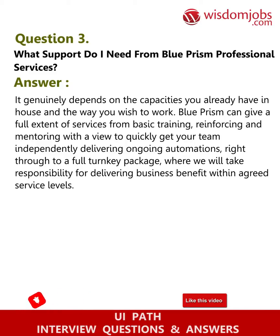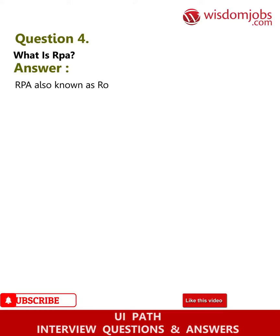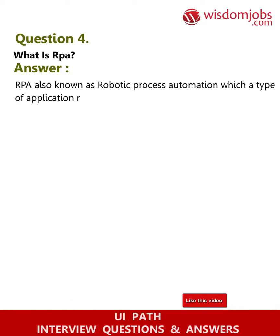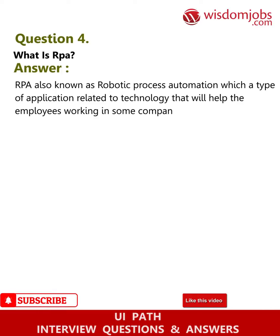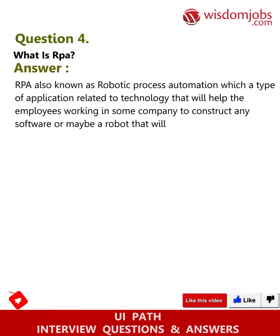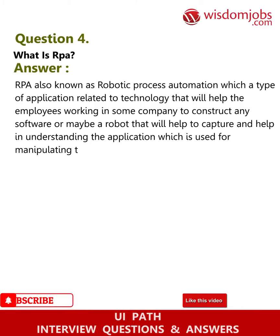Question four: What is RPA? Answer: RPA, also known as Robotic Process Automation, is a type of application related to technology that helps employees in a company construct software or robots that capture and help in understanding applications used for manipulating data, transaction processing, communication, and triggering responses.